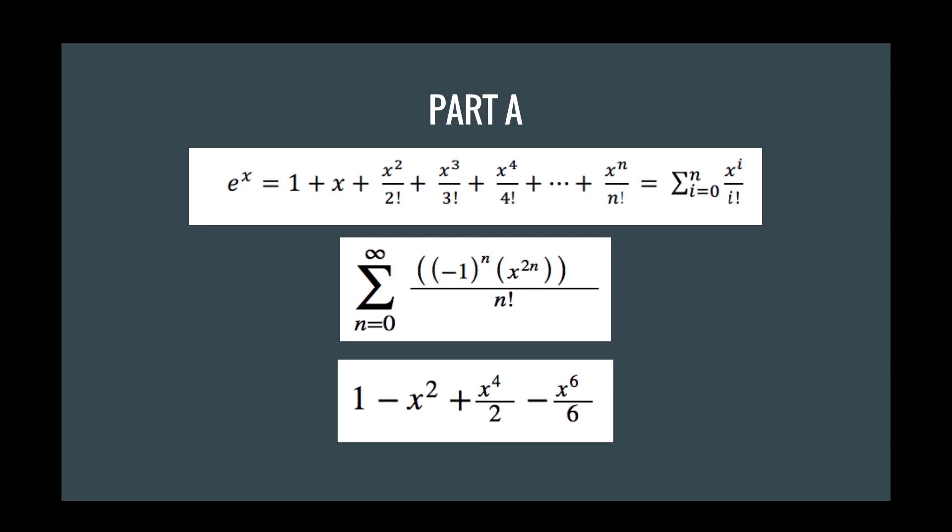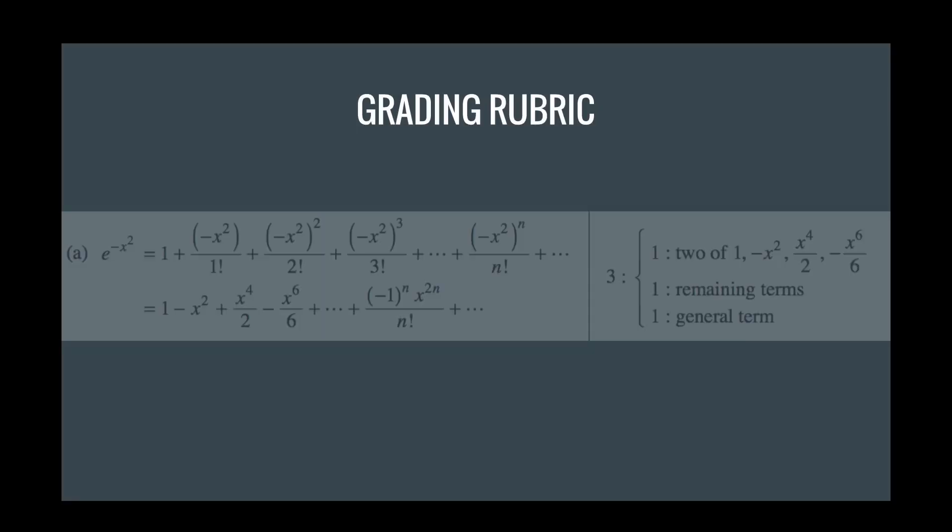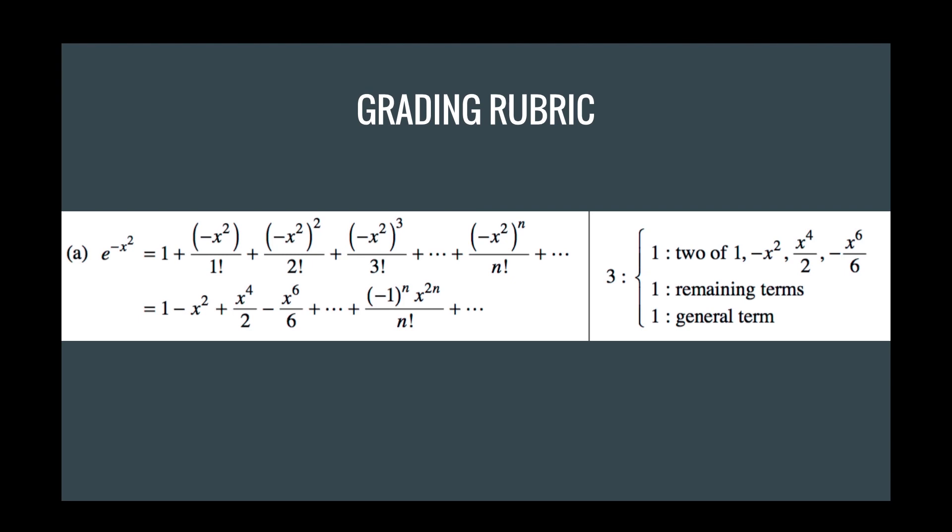So the best part about this problem is that since it's so easy, it's worth three points. That's over one-third of the total value of this problem. And if you look at the grading, you'll see that you'll get one point for just having two of the values, negative x squared or x to the fourth over 2 and negative x to the sixth over 6. And then you get one more point for having the other four terms, and you get one point for the general term itself. Three points for an easy problem, it's good.